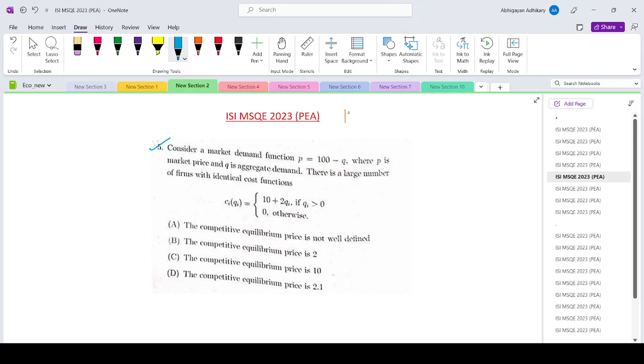There are a large number of forms with identical cost functions, which is basically c_i of q_i equals 10 plus 2q_i if q_i is positive, and 0 otherwise.